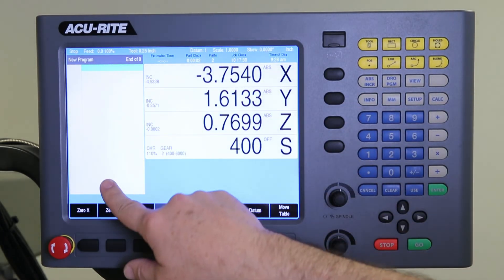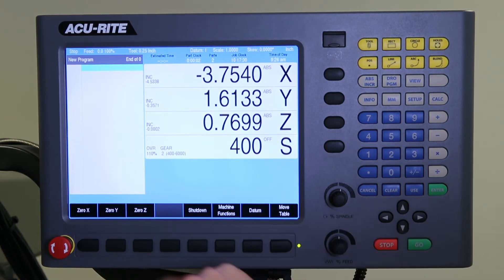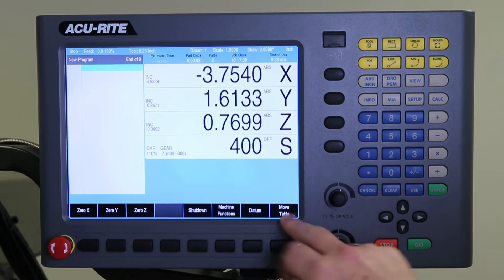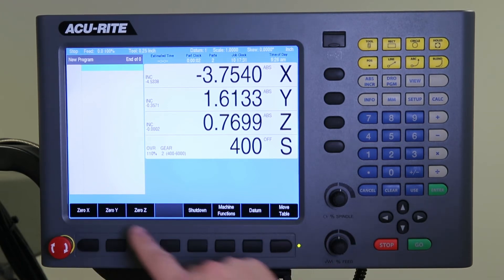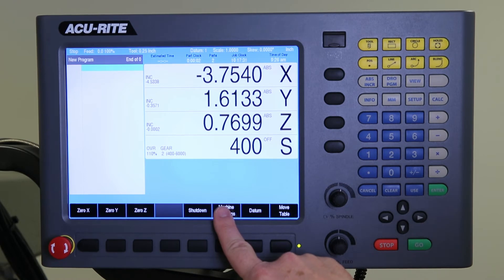And then over here we would display a program listing if you actually had a program loaded in the DRO mode. Down here are the soft keys that correspond to these function keys at the bottom of the control and just above the row of soft keys is where we would display messages or operator intervention messages.